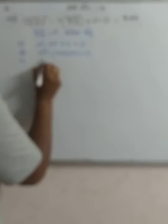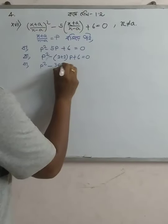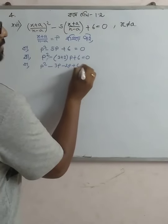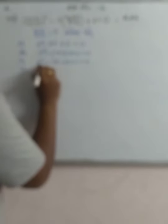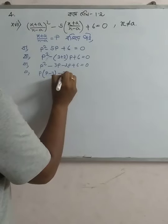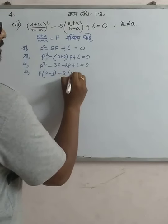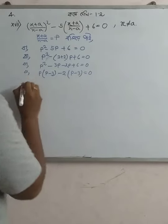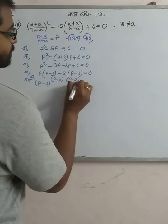So, p squared minus 3p minus 2p plus 6 is equal to 0. So, p minus 3 into p minus 2 is equal to 0.